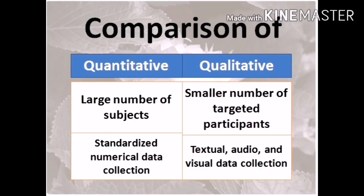As you can see on the table, in quantitative research we have a large number of subjects, while in qualitative we have a smaller number of targeted participants. In quantitative research, you compute the sample size to get the number of participants. While in qualitative research, it can be 1, 2, 3, or even 5 — it depends on the subject matter. An example of a smaller number in qualitative is a case study or a narrative, where you can have only one subject.